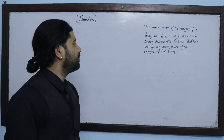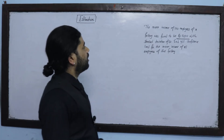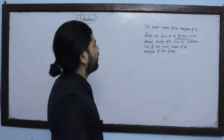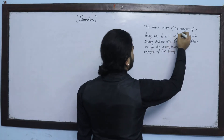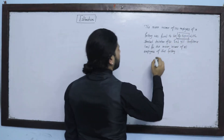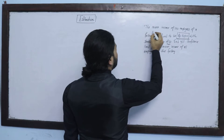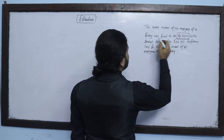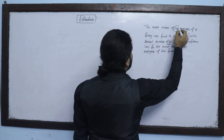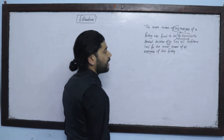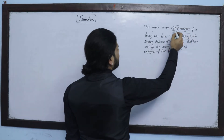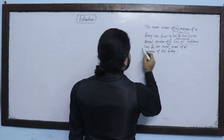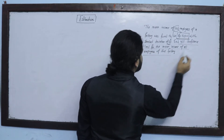We have a question. The mean income of 100 employees of a factory was found to be 5,000 with standard deviation 60. Find the 95% confidence limit for the mean income of all employees.